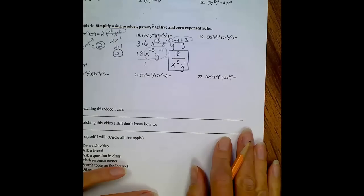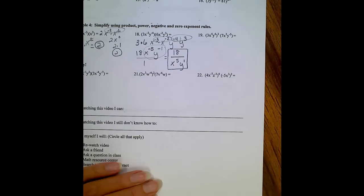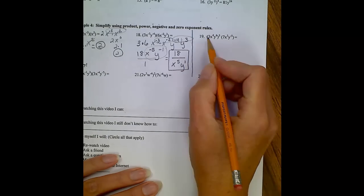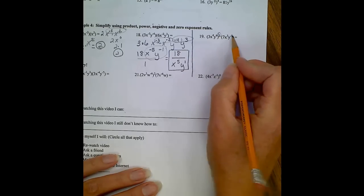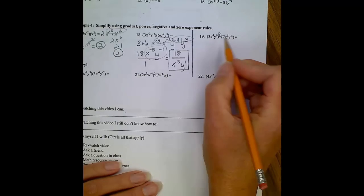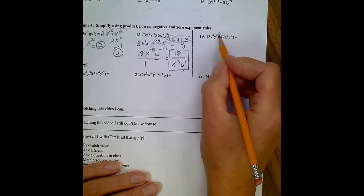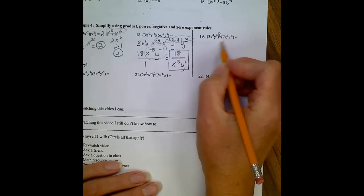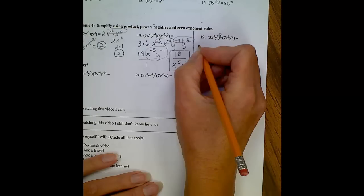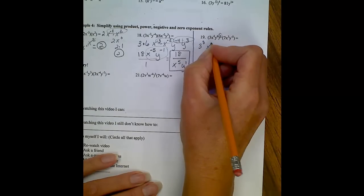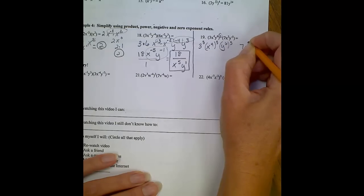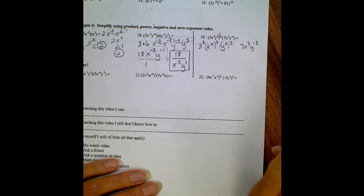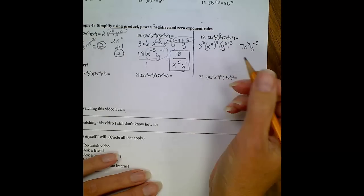Final problem for the day, and it's a little challenging, I'm not going to lie. Number 19: 3x to the 4th, y to the 6th, all raised to the 3rd power, times 7x to the 3rd, y to the negative 5th. There's a lot going on here. We've already talked about addressing this exponent first before we do multiplication. So I'm going to do a quick rewrite so I know what I'm doing with it. 3 to the 3rd, x to the 4th to the 3rd, and y to the 6th to the 3rd. And then I don't want to forget about my 7, x to the 3rd, y to the negative 5th term, so I'm just going to put it on the side for now.